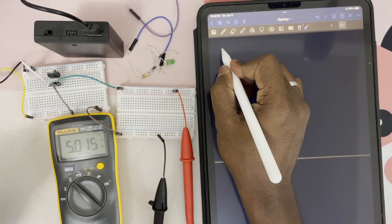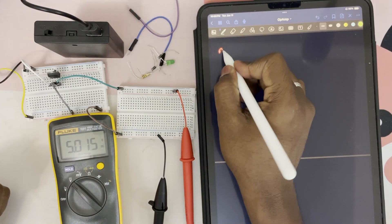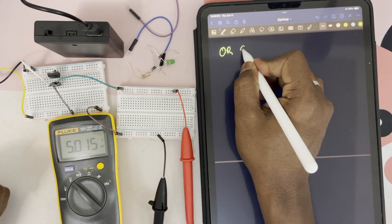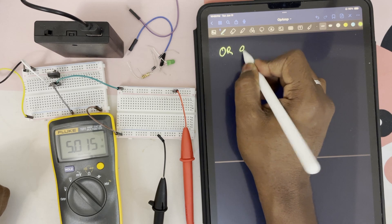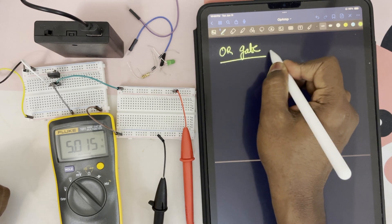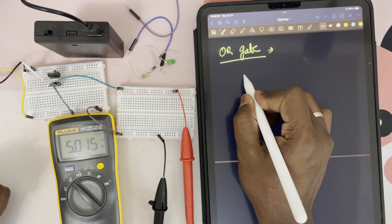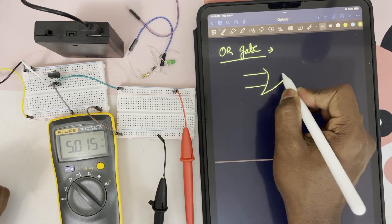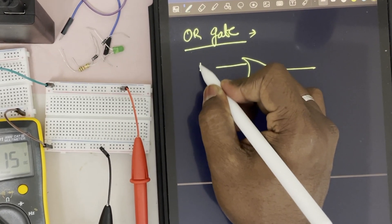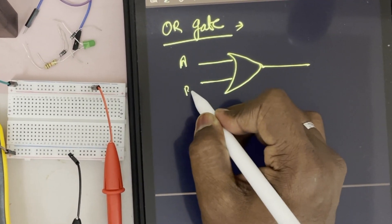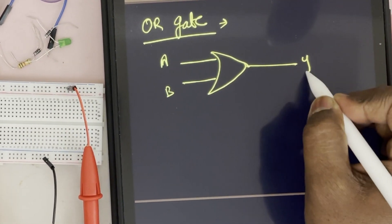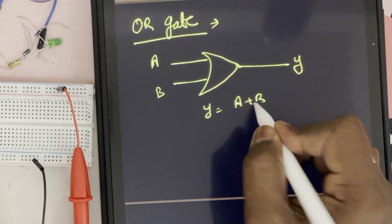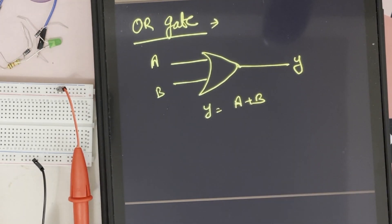For the OR gate, the symbol is this one. This is A and this is B. This is Y. Y equals A plus B.